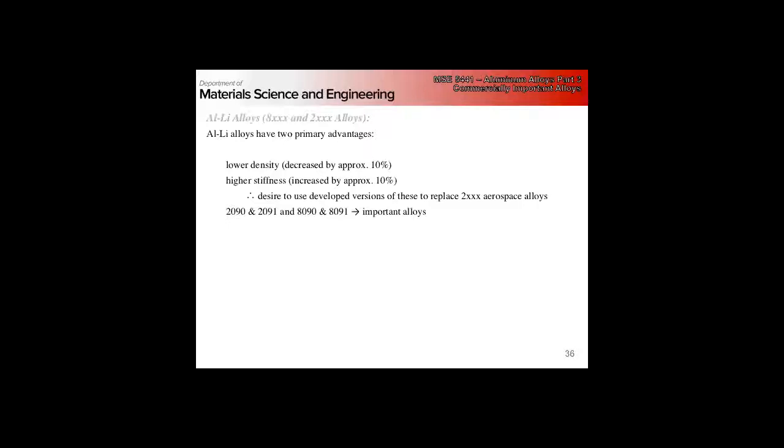Why do we care about Young's modulus so much? Decreased density is really obvious - if we want to have alloys that fly, the lighter the plane, the less fuel you have to use. Why do we care so much about stiffness? The yield strength is improved, but that's not necessarily the primary reason.